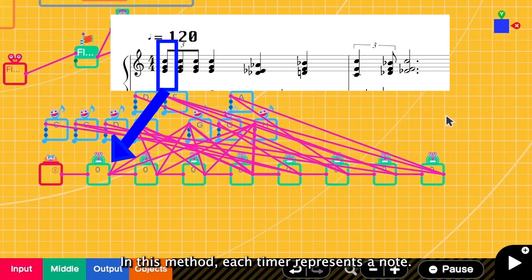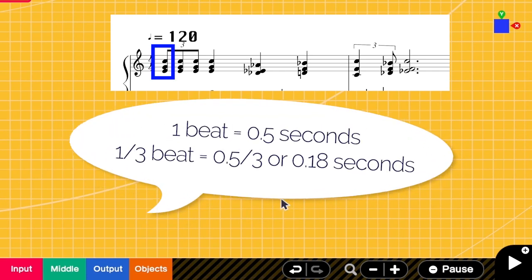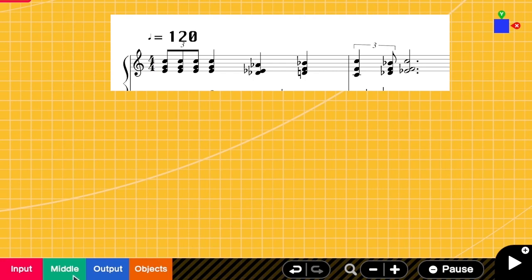In this method, each timer will represent a note. In this music sheet, the tempo is 120, so 1 beat has 0.5 seconds. The first note duration is 1 third of a beat, so we need to play it for 0.18 seconds.